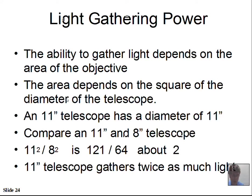We're not going to calculate areas in detail. Instead, we're going to learn how to compare one telescope to another in terms of light-gathering ability. Suppose we have an 11-inch telescope and we want to compare it to an 8-inch telescope. To compare, we square the two numbers and divide: 11 squared is 121, 8 squared is 64, and 121 divided by 64 is roughly 2. This tells us the 11-inch telescope gathers twice as much light as the 8-inch telescope.